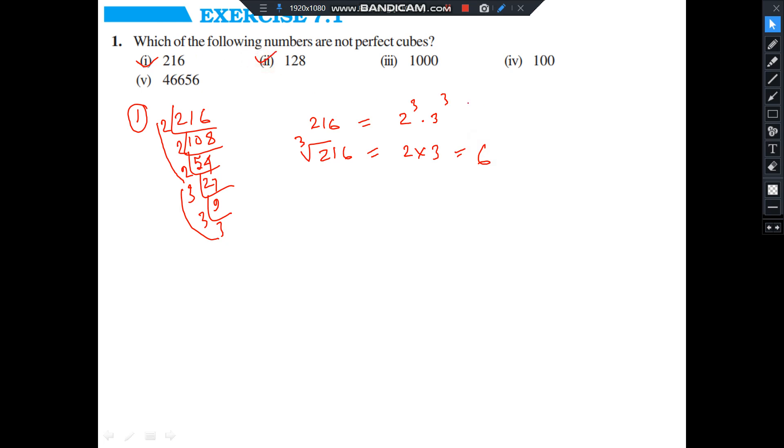Now number 2 is 128. Factoring by 2: 64, 32, 16, 8, 4, 2, 1. So here also see, 1 is extra. Cube root of 128, that is equal to 2 cube into 2 cube into 2. See here 1 extra 2 is there.